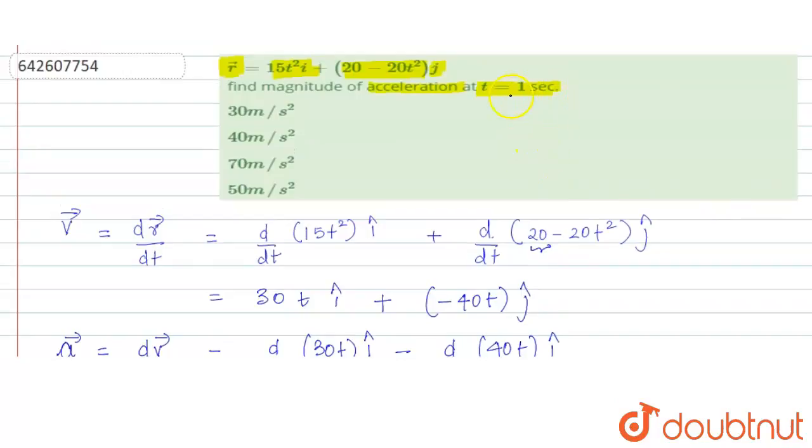So at all times the acceleration is constant, and that value is 50 meters per second squared. We had to find the acceleration at time t equals 1 second, so accordingly we can choose option D. I hope this helps you with the answer. Thank you.